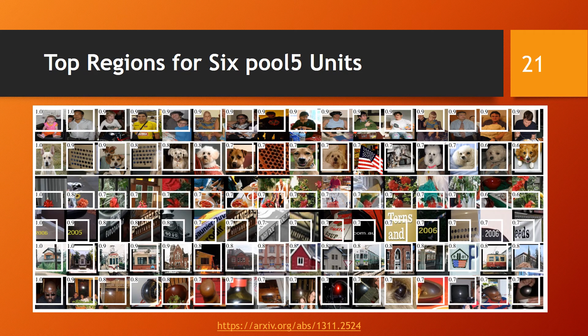To visualize what the network learned, units from layer pool5 are illustrated. Receptive fields and activation values are drawn in white. Some units are aligned to concepts like text in the fourth row, while other units are aligned to texture. This demonstrates that the RCNN learns a representation that combines a small number of class-tuned features with a distributed representation of different properties.